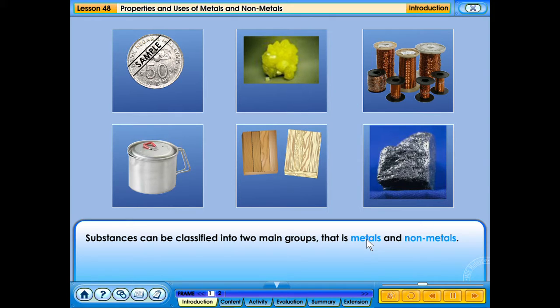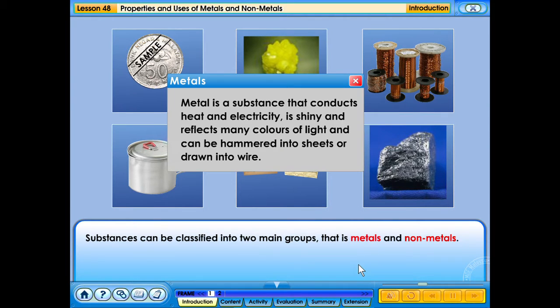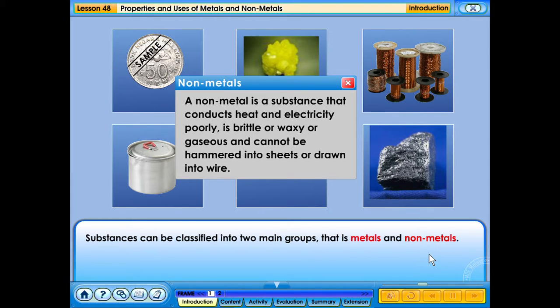Metal is a substance that conducts heat and electricity, is shiny and reflects many colors of light and can be hammered into sheets or drawn into wire. A non-metal is a substance that conducts heat and electricity poorly, is brittle or waxy or gaseous and cannot be hammered into sheets or drawn into wire.